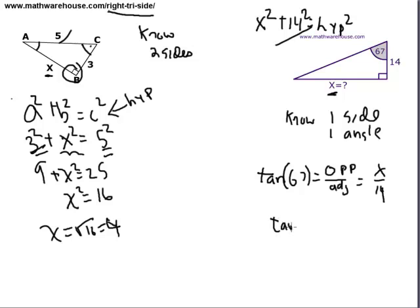So to find x, you just cross multiply. tan(67) × 14 = x.